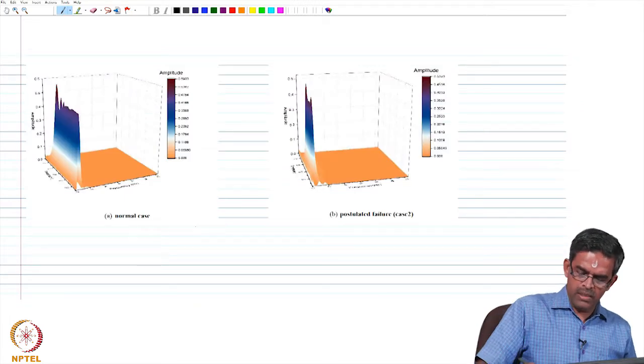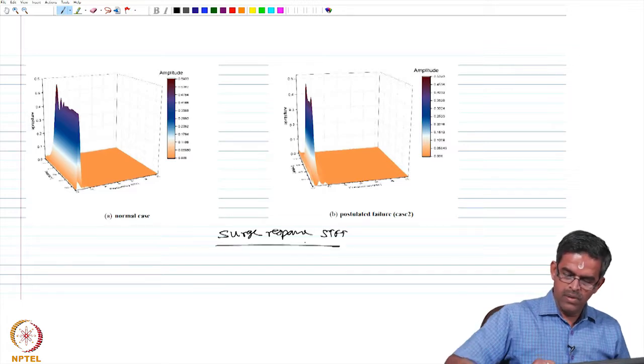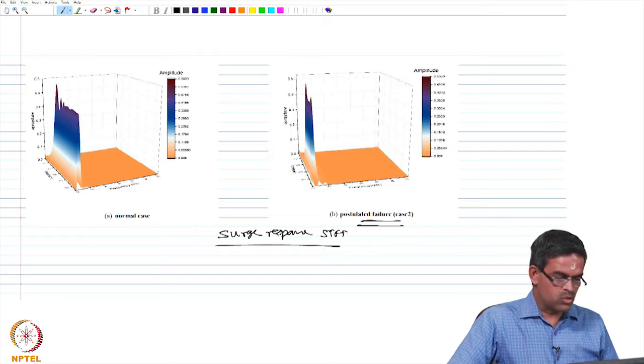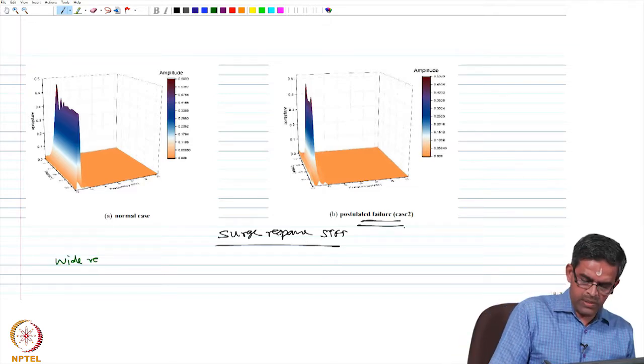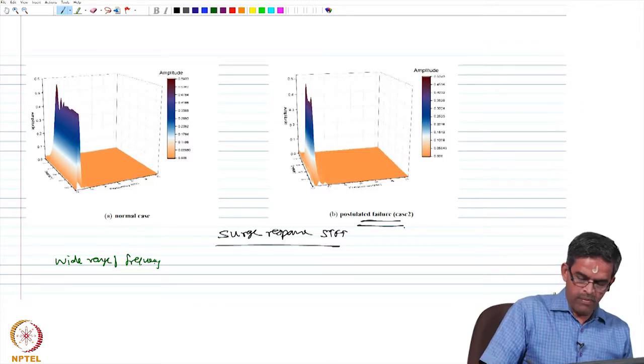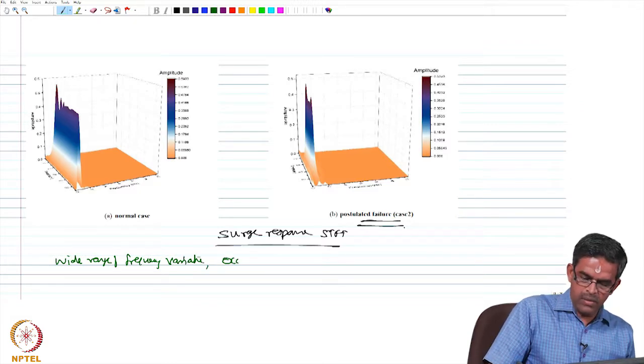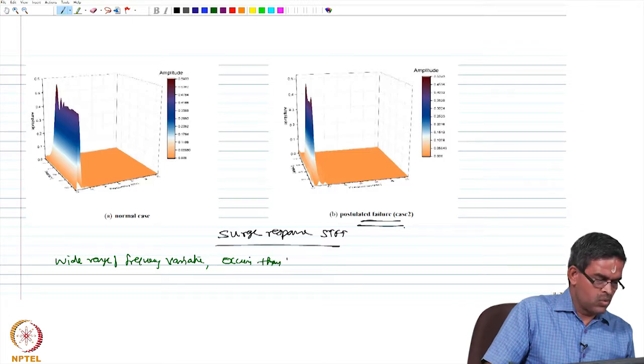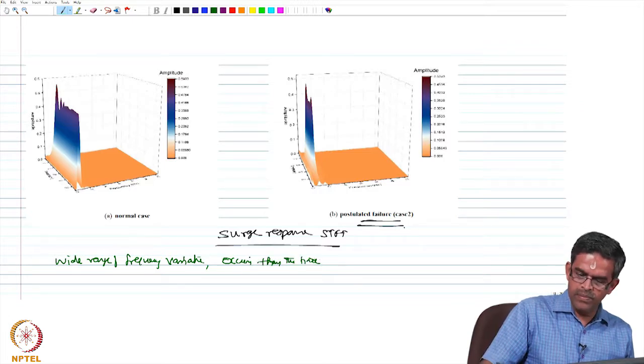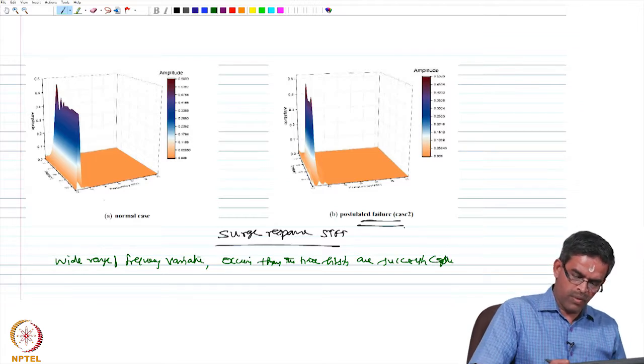This is the normal case and this is the postulated failure case 2. A wide range of frequency variations occurring throughout the time history are successfully captured. This is the frequency plot.